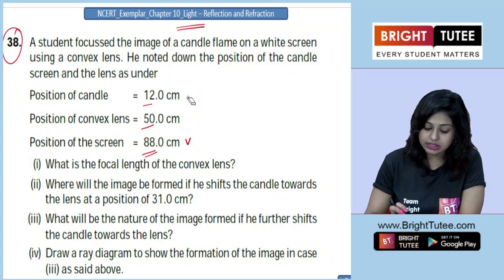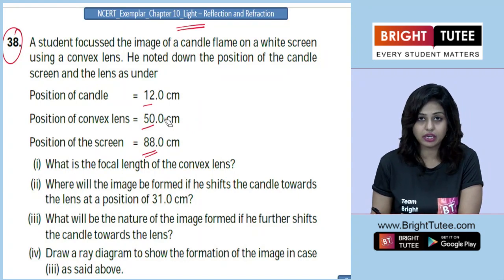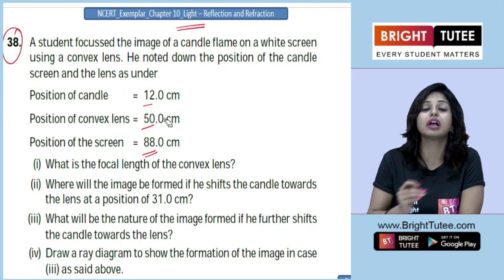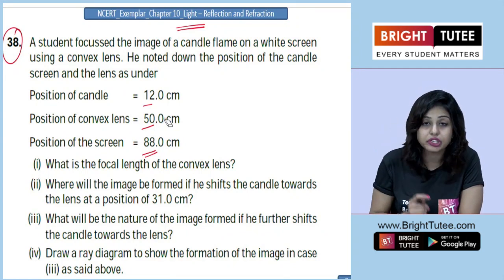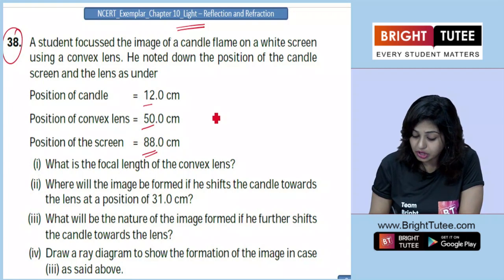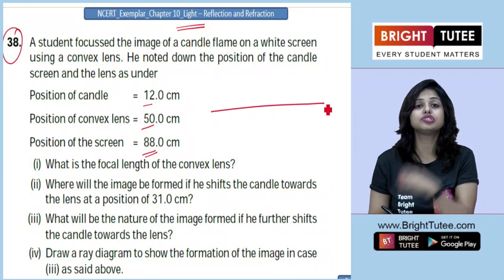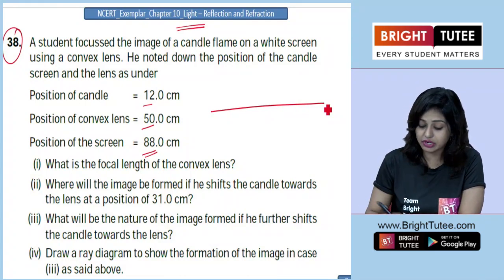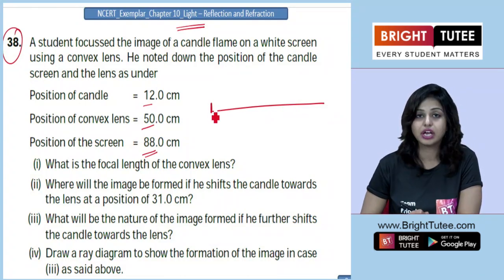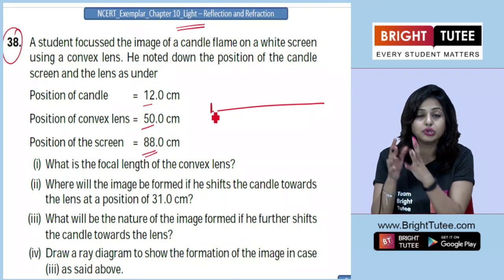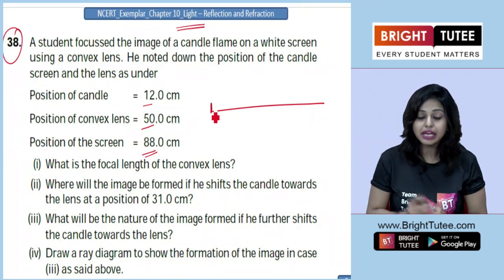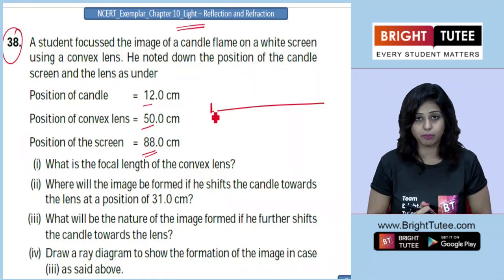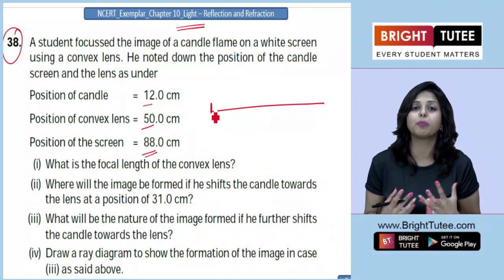Whenever you conduct such an experiment to find the image of an object using a lens inside a laboratory, you use a table and a frame in which you place various objects at different distances. The distances are all measured from one edge. So these are not directly U, V, and F. You have to decode them and find out U, V, and F for the problem.